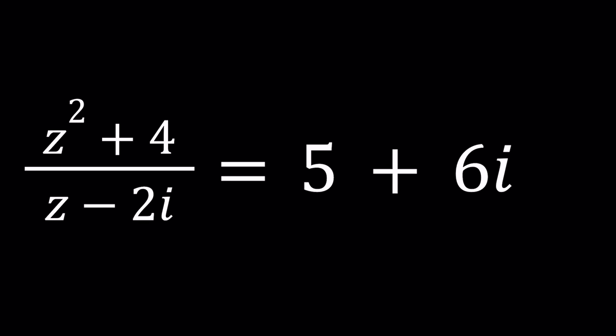Hello everyone, welcome to a plus bi. This channel is all about complex numbers and in this video we're going to be looking at a rational equation. We have z squared plus 4 divided by z minus 2i and it's equal to 5 plus 6i. So we're going to be solving for z values. If you're new to complex numbers go ahead and check out my lecture videos where I go over basics of complex numbers and also ask a lot of questions. That's the best way to learn.